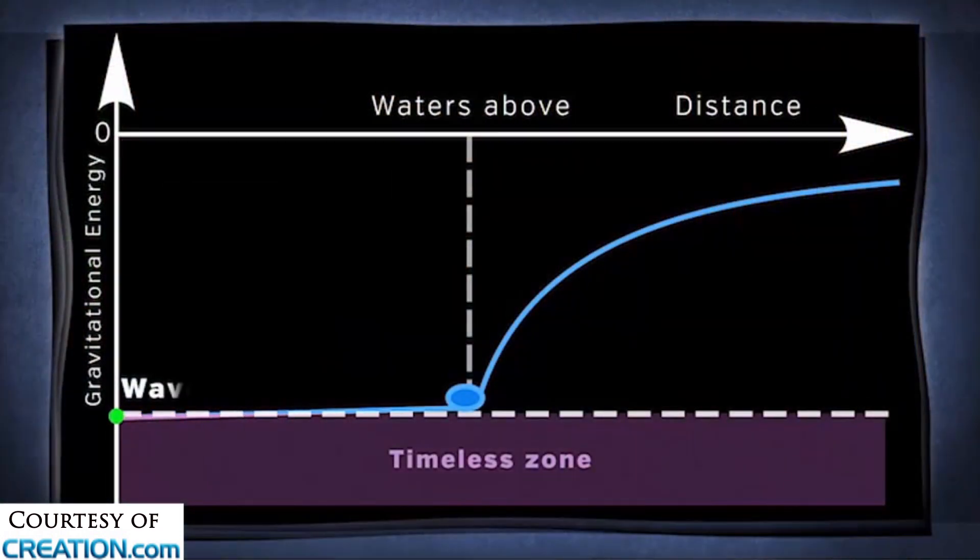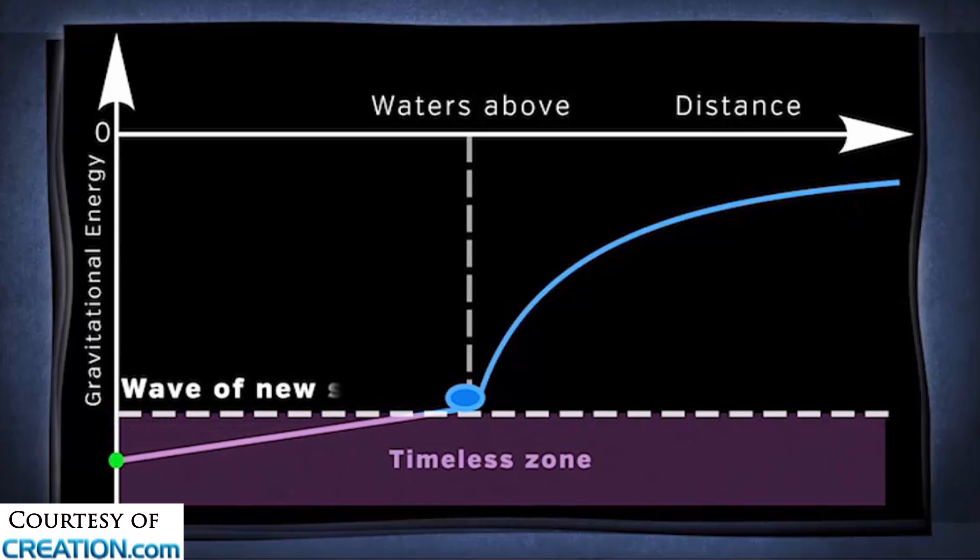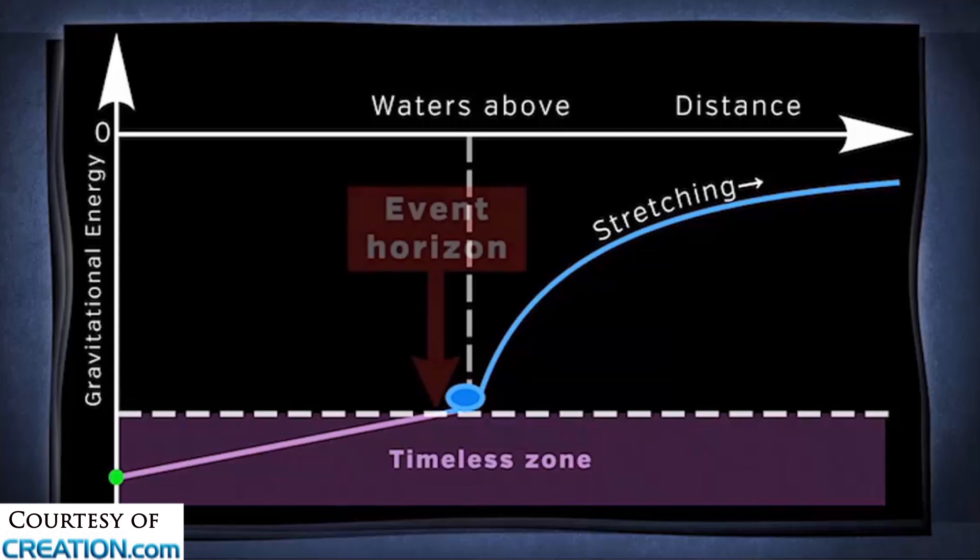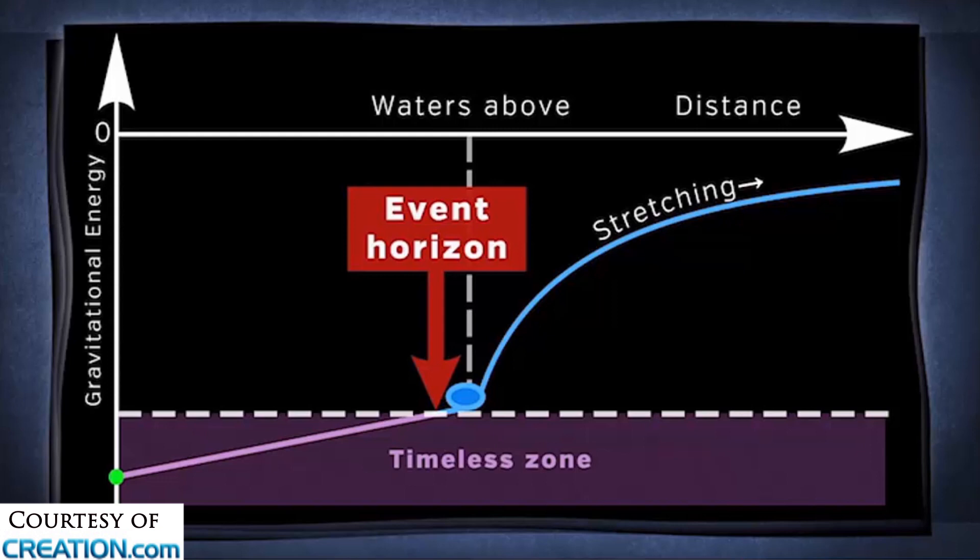So here we are starting the action just after God has made the dent deeper with the stars, and now we're going to apply stretching and pull all of that up. So I want you to keep your eye on that vertical red arrow that's labeled event horizon.